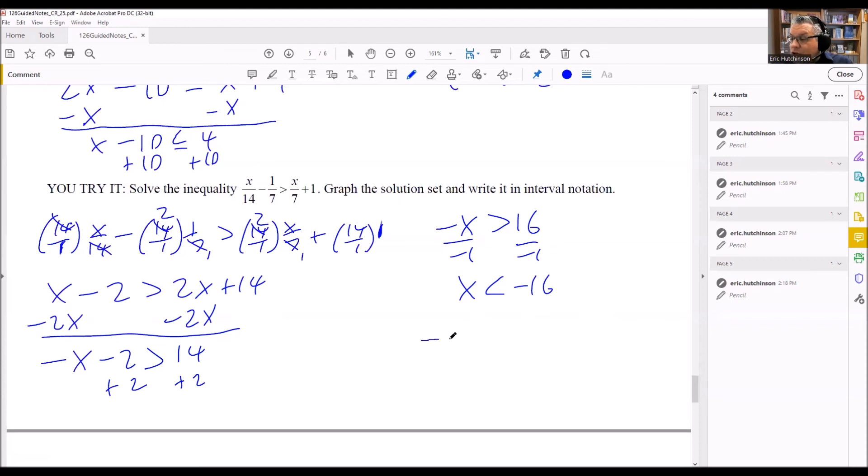Now that I have this complete, I just need to do the number line and interval notation. Negative 16 is going to be an open circle, and it's less than, which means it's opening up to the left. Since it goes to the left, I start with negative infinity. That goes to -16, and -16 has a parenthesis because of the open circle. There's no equal sign in the original problem at all or at the end, so that's why we're using an open circle and a parenthesis.